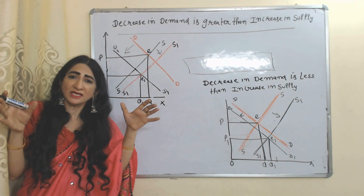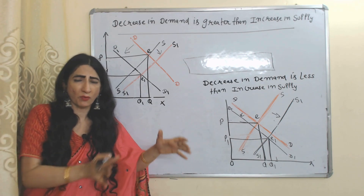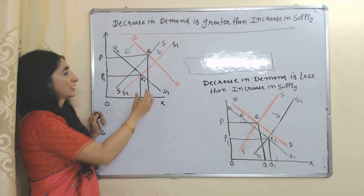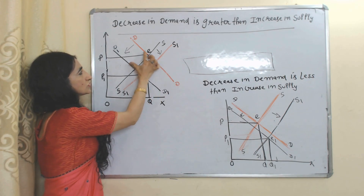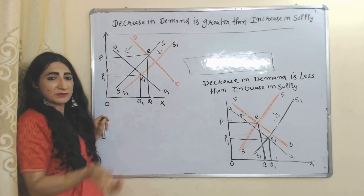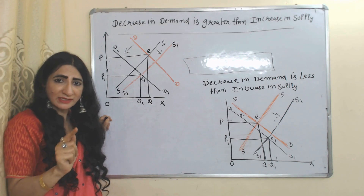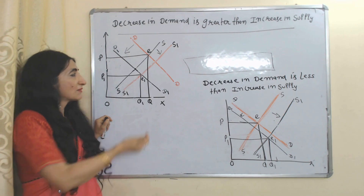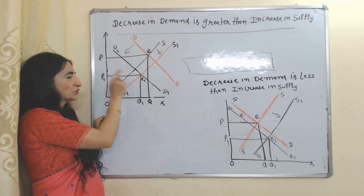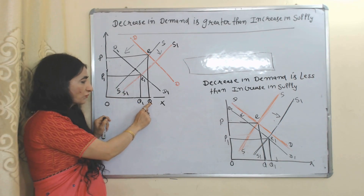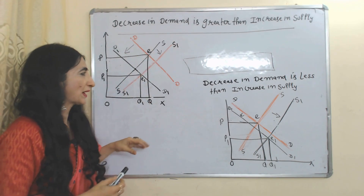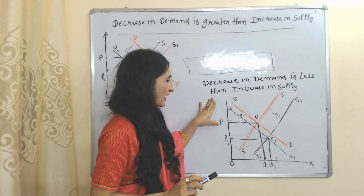Next case: decrease in demand is greater than increase in supply — demand is reducing a lot and supply is increasing a little bit. E is the initial equilibrium point, E1 is the new equilibrium point. You can see demand reduces so much but supply increases a little bit. As a result, prices reduce from P to P1. Why? Demand is reducing and supply is still increasing, so prices reduce. But overall quantity also reduces from Q to Q1 because the proportion of reduction in demand is greater than the increase in supply.